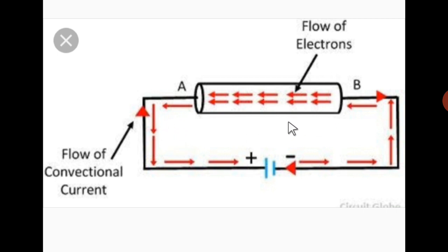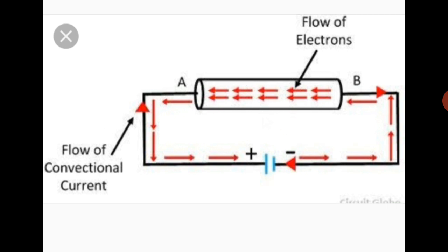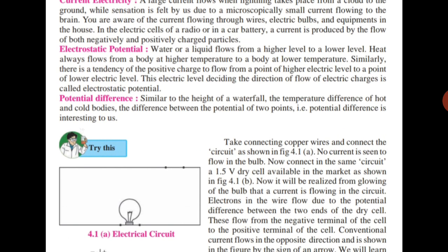Electrons flow from negative to positive, that is from higher potential to lower potential. The flow of conventional current is in the opposite direction — from positive to negative. So current flows from positive to negative, and electrons flow from negative to positive, from higher potential to lower potential. This is the process of flowing free electrons in a specific direction to produce current electricity.